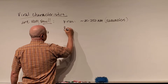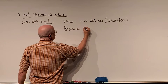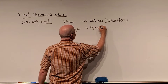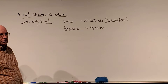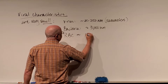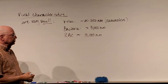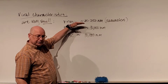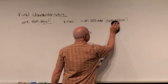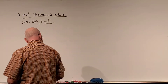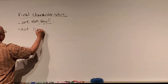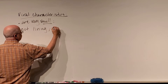By comparison, bacteria can be somewhere around even the smallest about 3,000 nanometers, and the human red blood cell is approximately around 10,000 nanometers. So we're looking at things that are even smaller than some of the bacteria we look at in lab — these are very, very tiny things. Very often they can pass through filters based on their size.